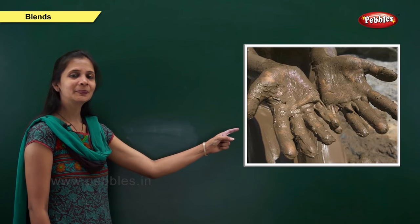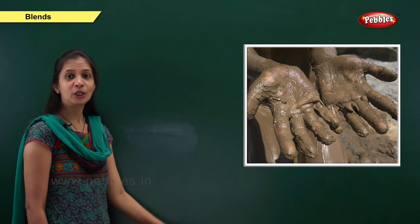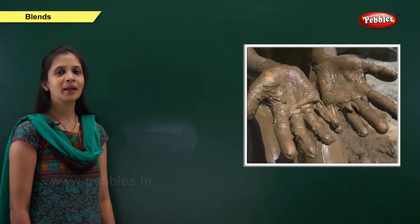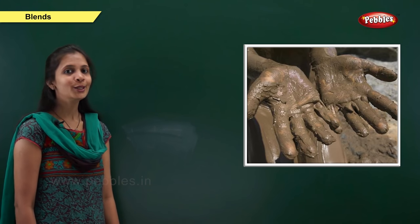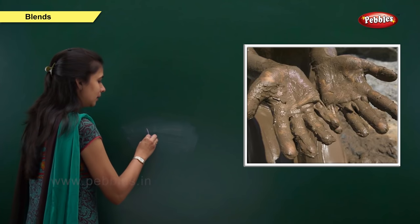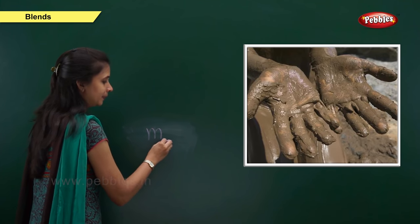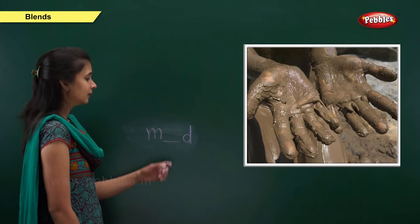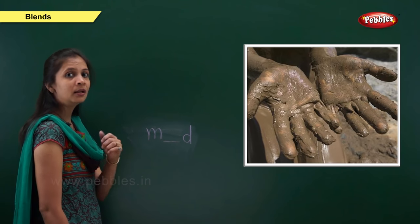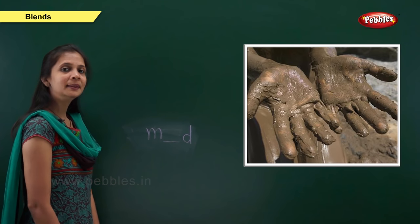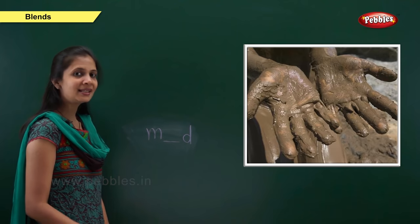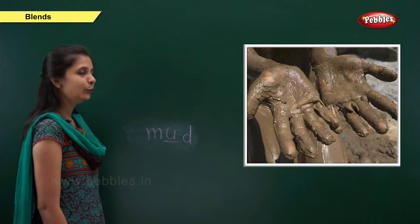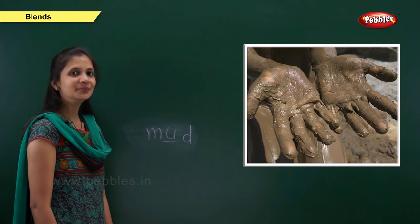Next one. Which picture is this? Yes, it is picture of mud. What is the sound of this word? It is ma, a, d. The letter is m. The letter is d. The middle sound is 'a'. The letter is u. The vowel u. So: m, u, d — mud.